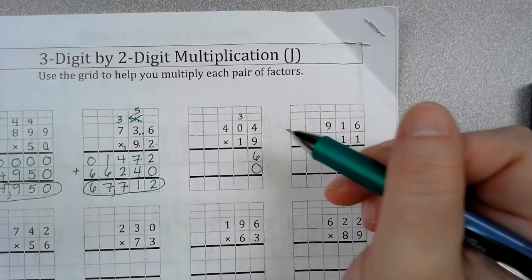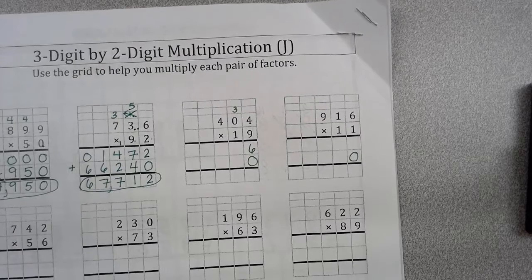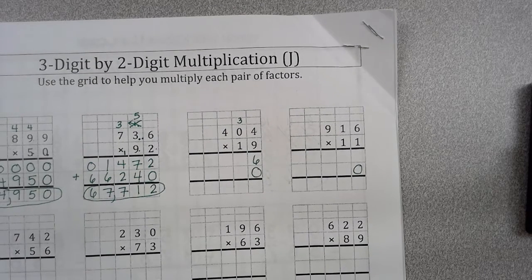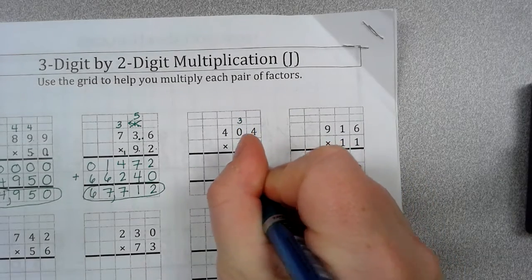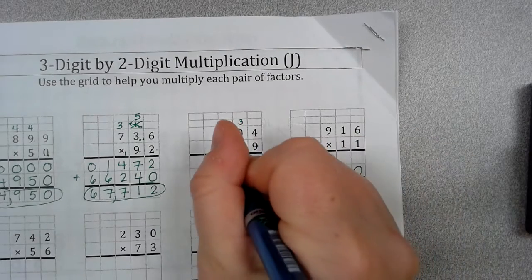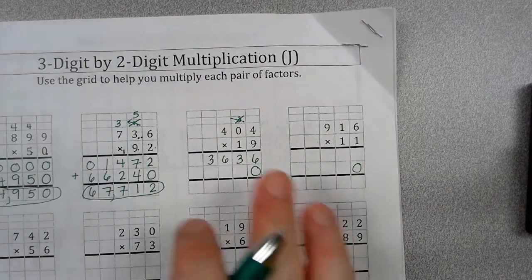9 times 0. Remember, any number times 0 is 0. So, 9 times 0 is 0. But, I still have to add this 3. So, it is 3. And then, 9 times 4, once again, is 36. I'm going to mark that 3 out.